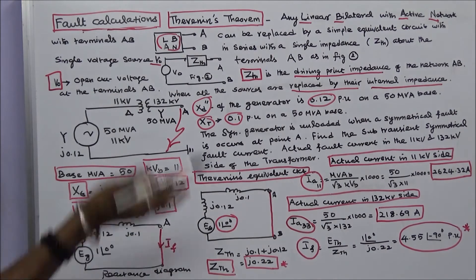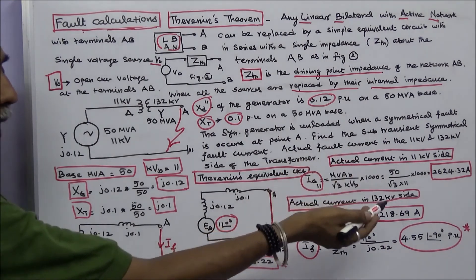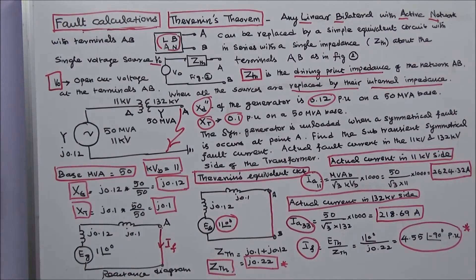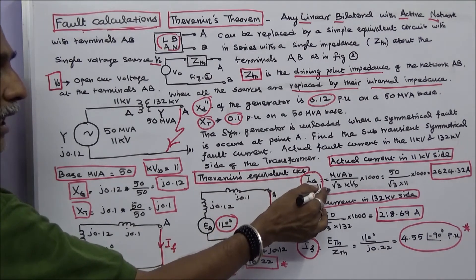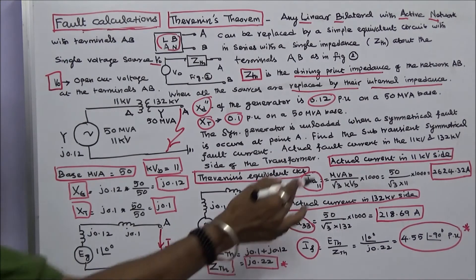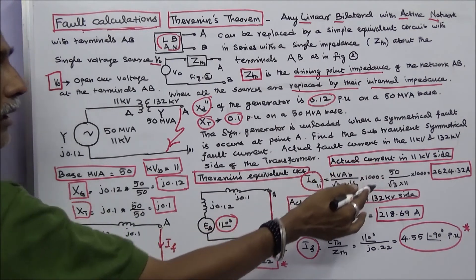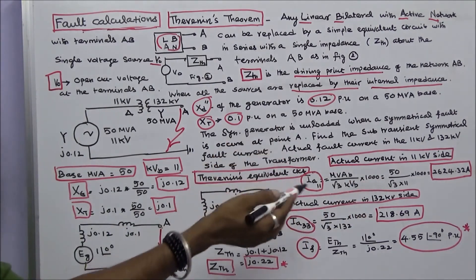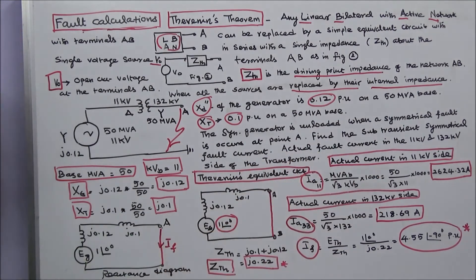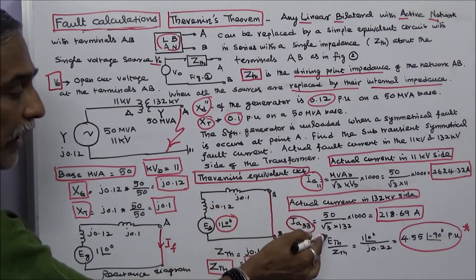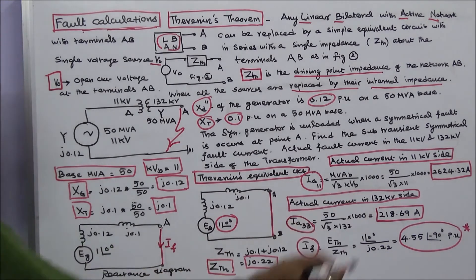The next step is to calculate actual current in the 11 kV side and actual current in the 132 kV side. Actual current in the 11 kV side is equal to MVA base divided by root 3 into kV base into 1000. So 50 by root 3 into 11 into 1000, that is equal to 2624.32 Amps. Similarly, in the 132 kV side, actual current is 50 by root 3 into 132 into 1000, that is equal to 218.69 Amps.